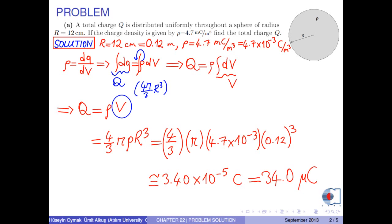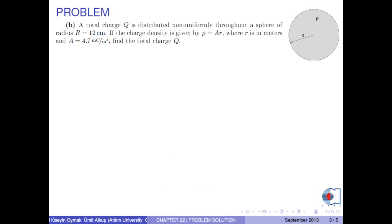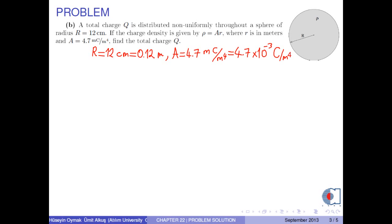Or 34 microcoulombs. Now let's solve part B. A total charge Q is distributed non-uniformly throughout the sphere of radius r equal to 12 cm. If the charge density is given by rho equals A times r, where r is in meters and A is 4.7 mC per meter to the fourth, find the total charge Q.